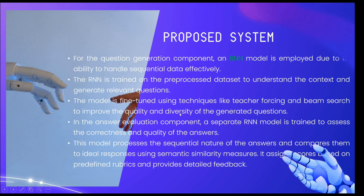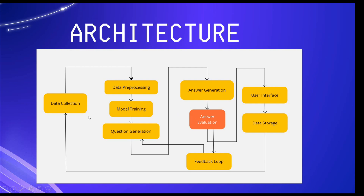This is the project architecture. The first pass is data collection — collecting various chapters of answers. Then pre-processing — removing stop words, links, and hypertext. Then model training using recurrent neural network to train all the collected data. Then question generation — the AI generates the important questions based on the trained data.